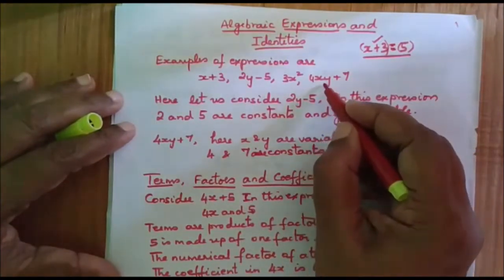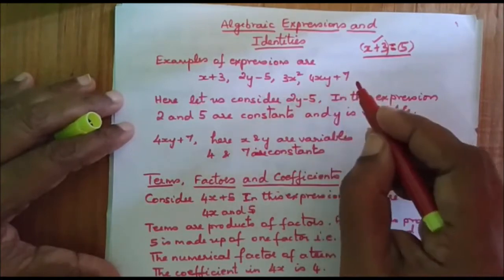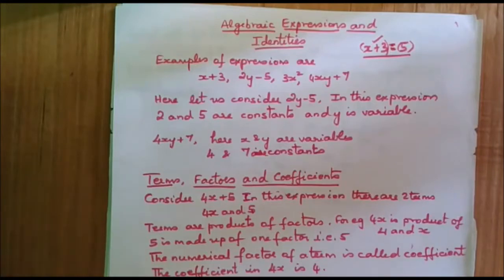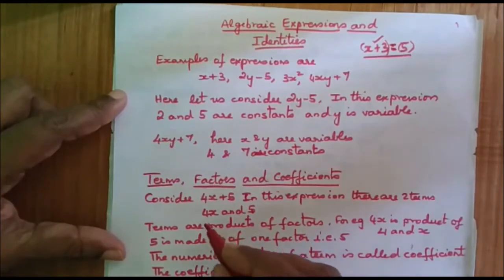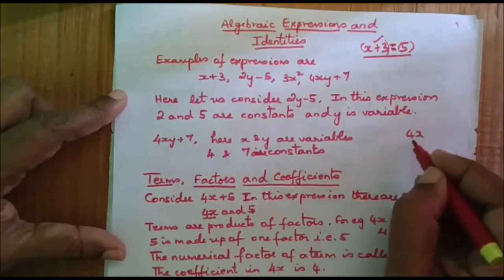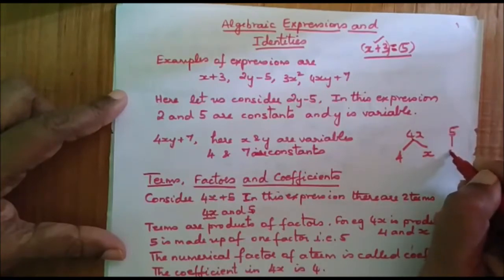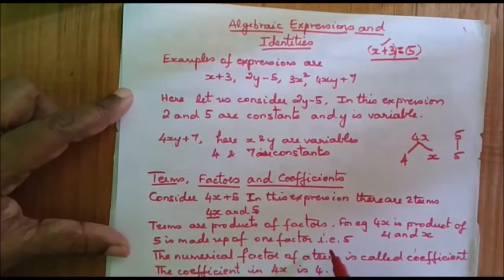Similarly, if I take the expression 4xy plus 7, there are two terms. Terms are joined by an addition sign or a subtraction sign, and when joined by minus or plus, the terms form an expression. Terms are products of factors. In the term 4x, the factors are 4 and x. The term 5 has only one factor, that is 5. So 4x is a product of 4 and x, and 5 is made up of one factor, that is 5.